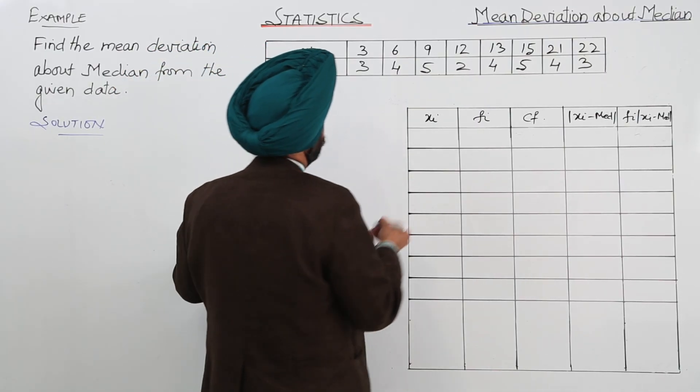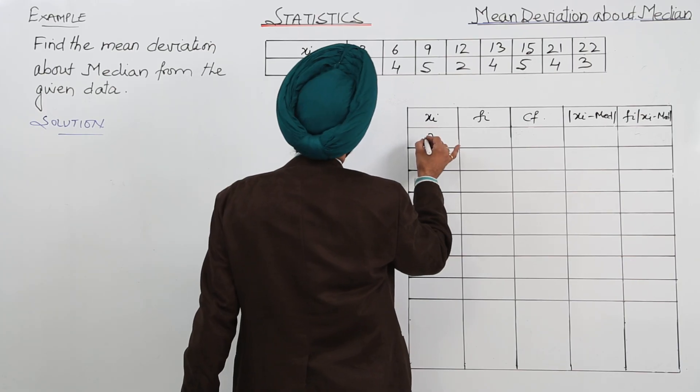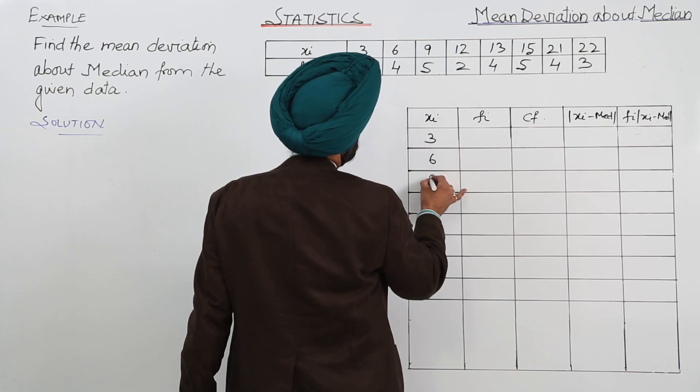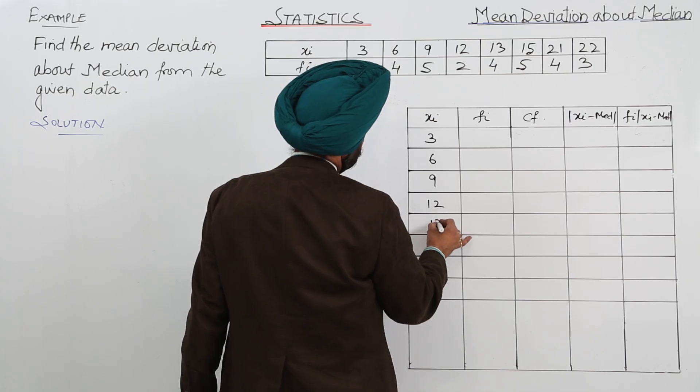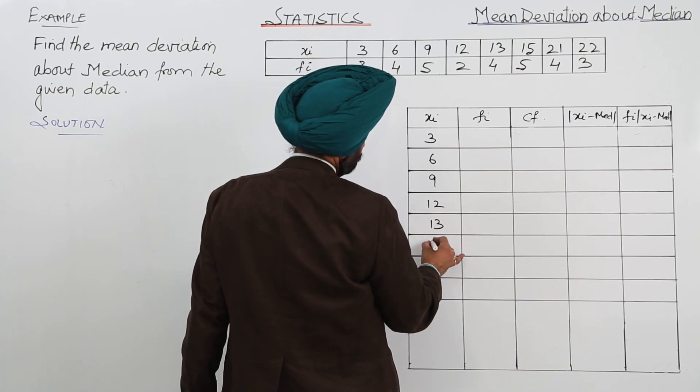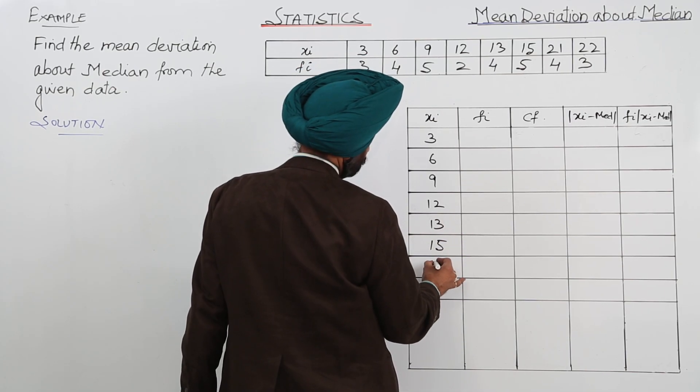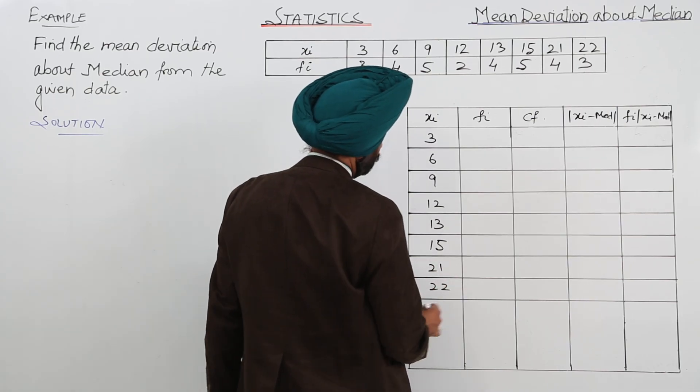Now we are having 3, 6, 9, 12, 13, 15, 21 and 22.